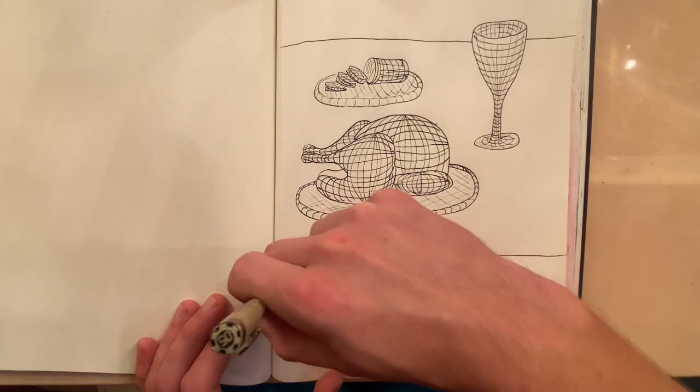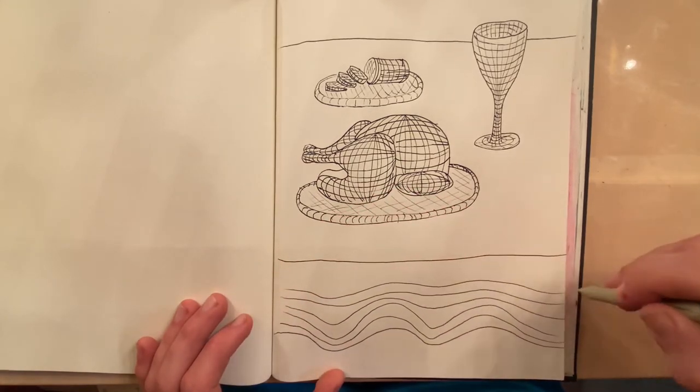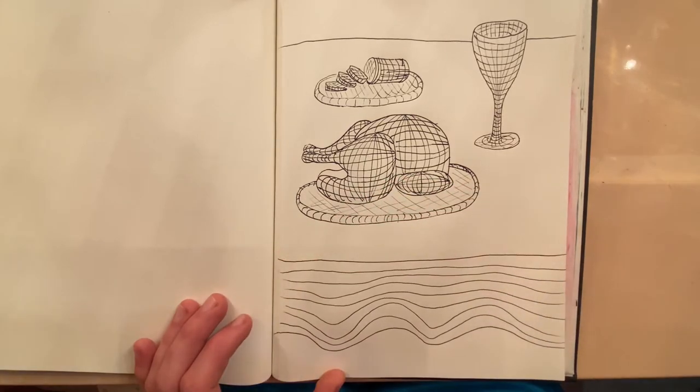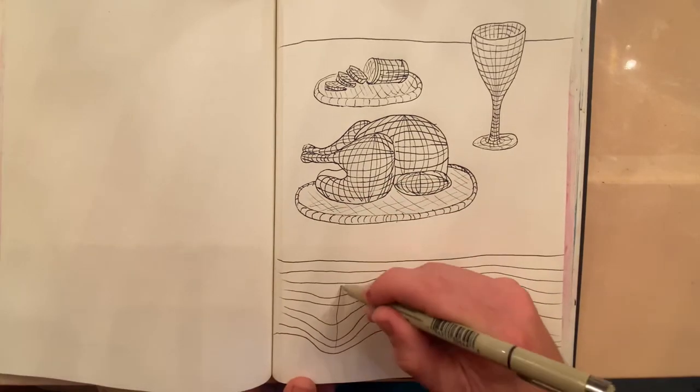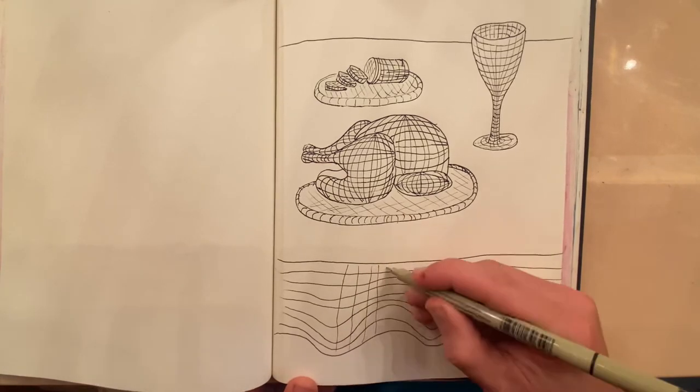For the skirt of the tablecloth, start by drawing a curving line that runs parallel to the bottom edge of the tablecloth. Have the horizontal lines gradually flatten out as they move towards the top of the table. The vertical lines can just run down vertical but they can be kind of loose and wavy.